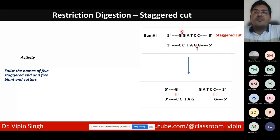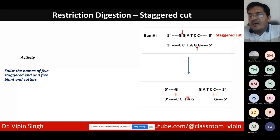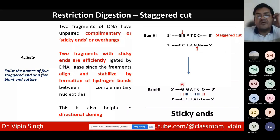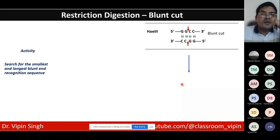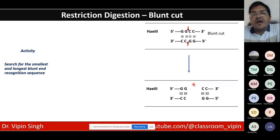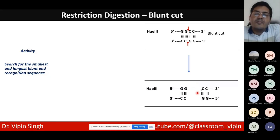For BamHI, the top strand and bottom strand cuts are staggered. After digestion, the resulting fragments have complementary overhangs that naturally come together by hydrogen bonding, making ligation more efficient — the ligase only needs to stabilize by creating the phosphodiester bond. For blunt-end cutters, the two fragments have no tendency to associate, so ligation efficiency depends on random proximity of fragments.